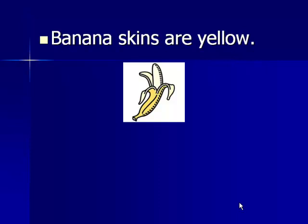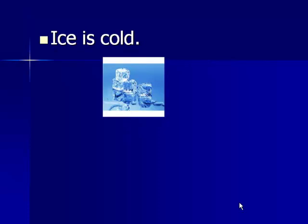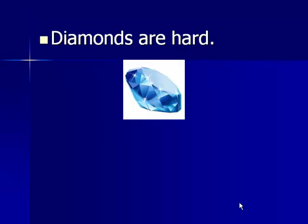Banana skins are yellow — a physical property. Battery acid is corrosive — that is a chemical property. Ice is cold — that is a physical property. Diamonds are hard, and that is another physical property.